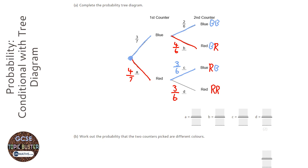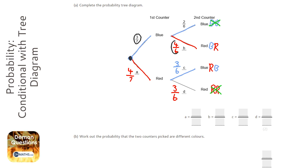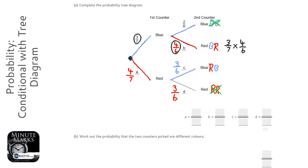Blue and blue are not different colours, so we're not interested in that. Red and red are not different colours. But the middle two are. With probability trees, you collect all the fractions you passed on your journey to the end. So for blue then red, we went past three over seven and four over six. The word 'and' is really important — in probability, 'and' means times, and you always multiply when going across a tree diagram.